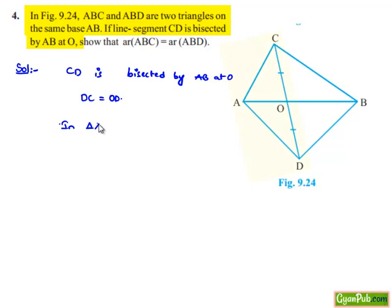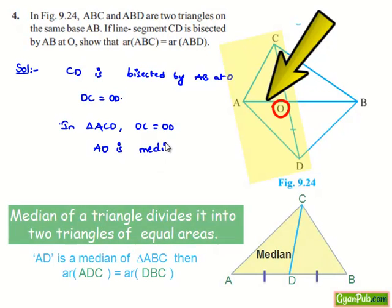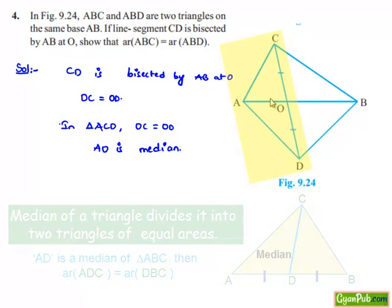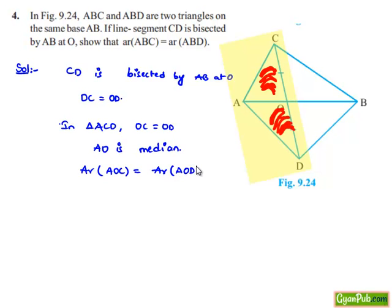Now, let us consider triangle ACD. Since OC is equal to OD, we can say that AO is a median. We know that in a triangle, a median divides the triangle into two equal halves, that is of same area. Therefore, area of triangle AOC is equal to area of triangle AOD. Let this be equation number 1.